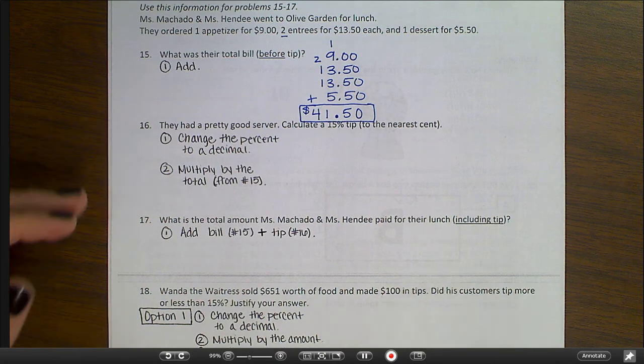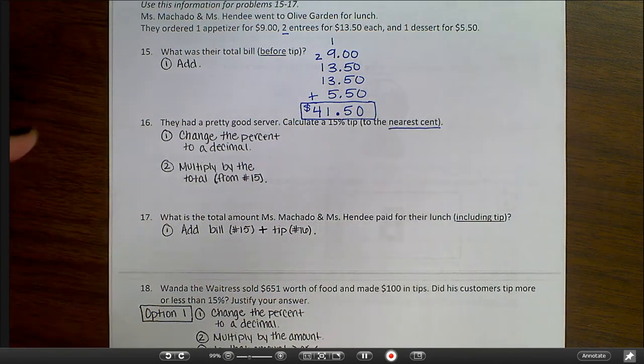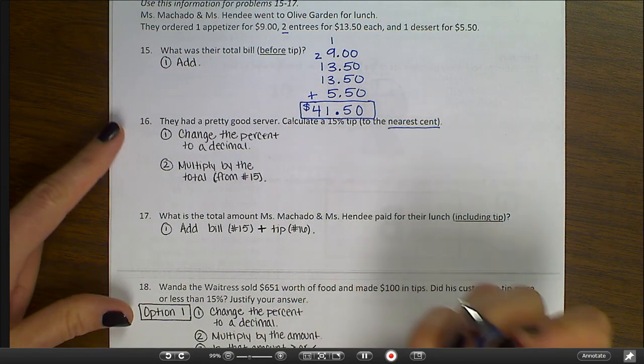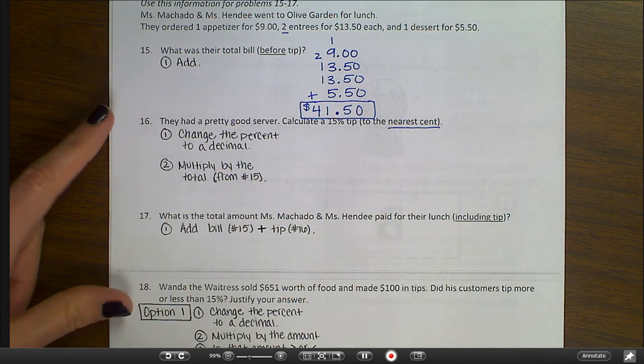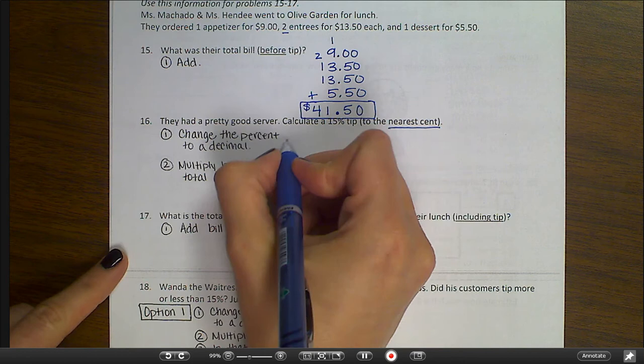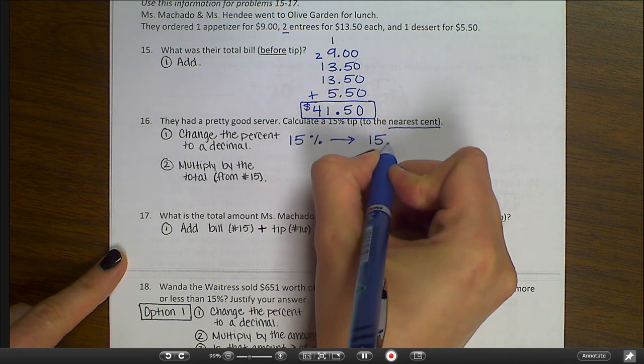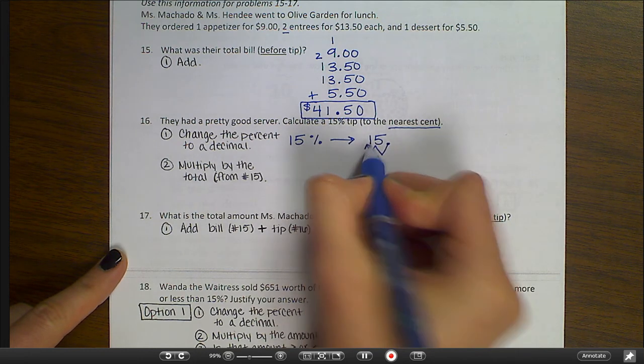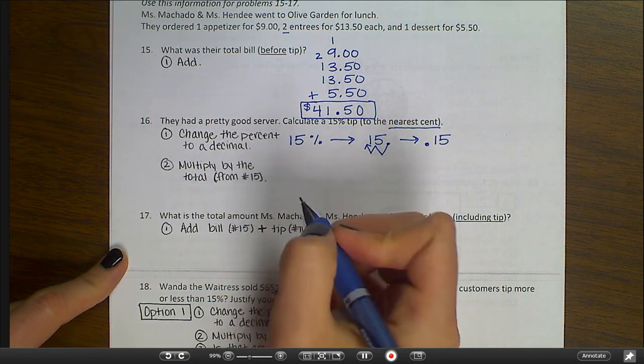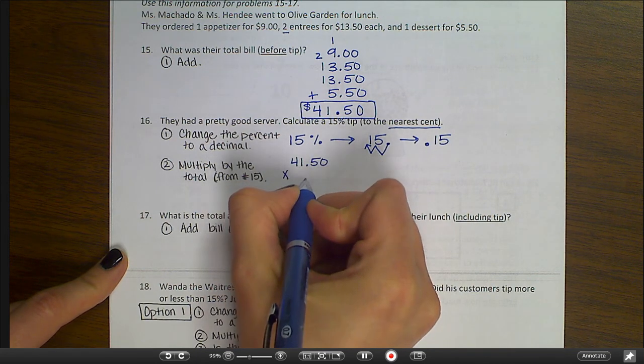Number 16 says they had a pretty good server. So we're going to calculate a 15% tip, and it says to the nearest cent. So if it goes on and on for more than two decimal places, we're just going to round to the nearest cent. Step 1 is to convert the percent to a decimal. Notice that we are doing the exact same steps that we would use when we're calculating a sale price or a discount. So 15%, I'm going to drop that percent sign. My decimal point is here, and I'm going to move two places to the left to give me 15 hundredths. Then I'm going to multiply by the total for the food. So 41.50 times 15 hundredths.